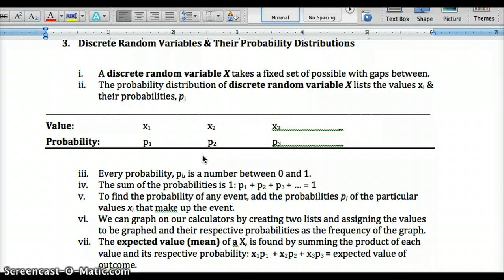We can then graph these. You can do this on your calculator by creating lists. L1, you'd put in the values. L2, you'd put in the probabilities. And then when you go to make your histogram, you'd put in L1 for your list. And for your frequency, you'd put in the probabilities. And it would give you a nice little graph.